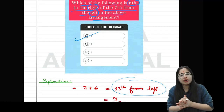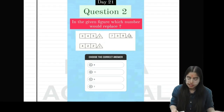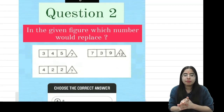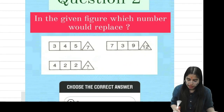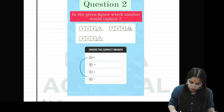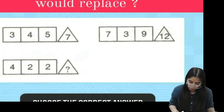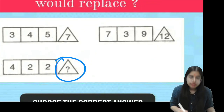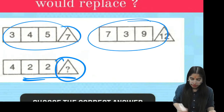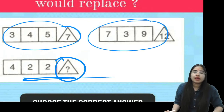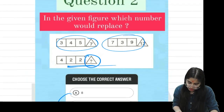I hope everybody is crystal clear. This short trick is very useful in the whole logical reasoning paper. Question number two is a figure in which a number is missing. You have to find the missing number by applying the pattern.